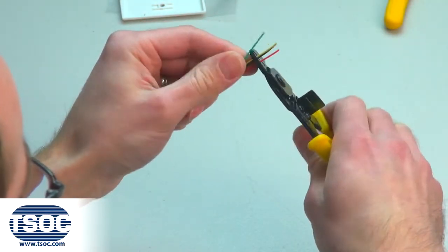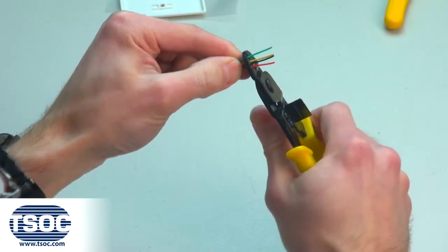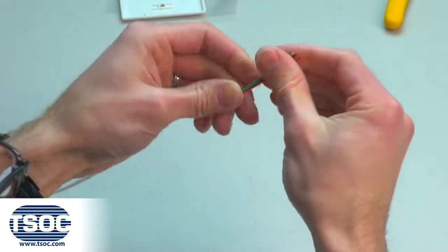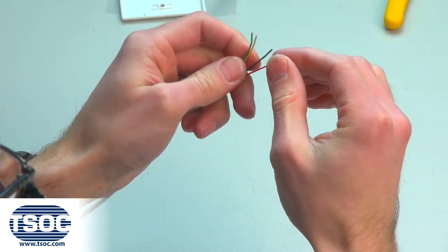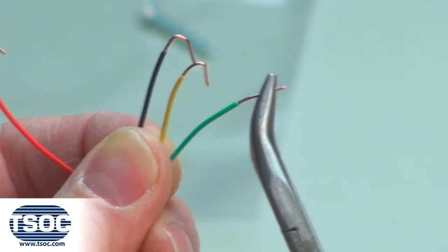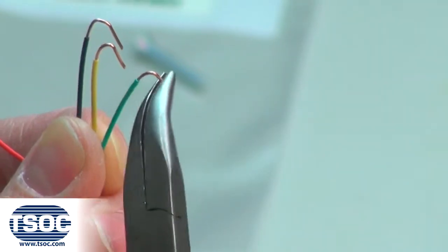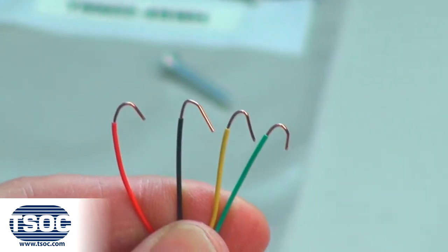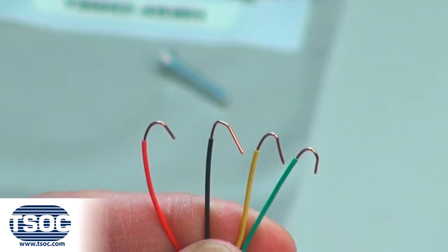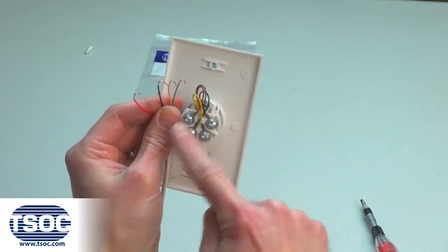Then use the needle nose pliers to bend the tips of the exposed conductors. Step 4: Follow the corresponding color codes and secure the UTP cable to the screw terminals of the flush mount jack using a Robertson or flathead screwdriver.